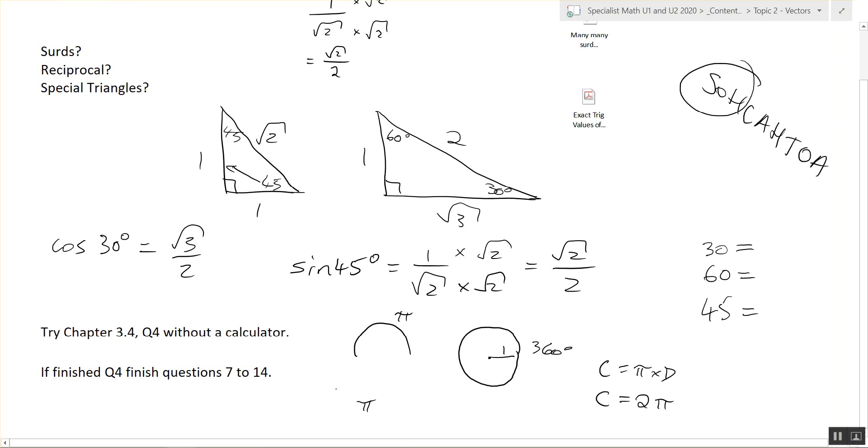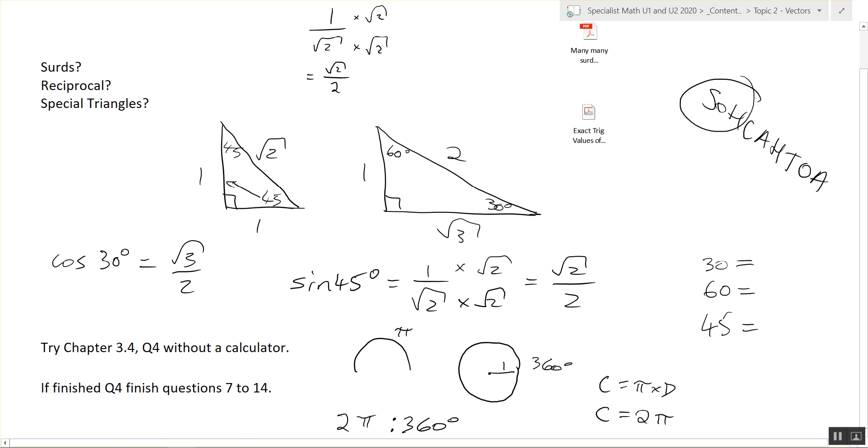Radians is when we express an angle in terms of pi. So you could have an angle that's 2 pi. How many degrees is that? It's 360 degrees. So for every pi that you see, you can just substitute in 180. So what would 30 degrees be in terms of pi?